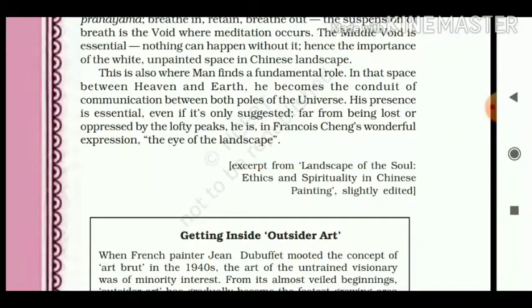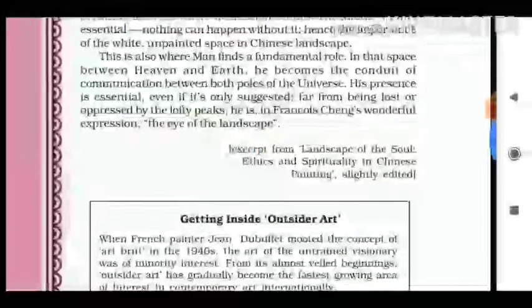His presence is essential — even if it's only suggested — for far from being lost or oppressed by the lofty peaks, he is, in François Cheng's wonderful expression, 'the eye of the landscape.' Aur François Cheng ke perspective se, yaani ki uske according, jo man hai jo ki third element hai between heaven and earth, is just like the eyes of the landscape — woh bilkul landscape ke eyes ki tarah hai. Uske bina baaki saari cheezein possible nahi hain — means he is the most important part of the universal energy.